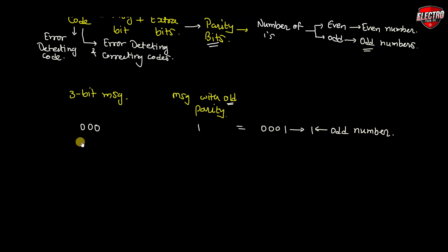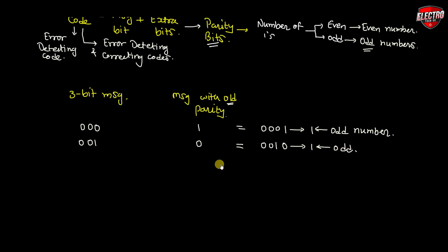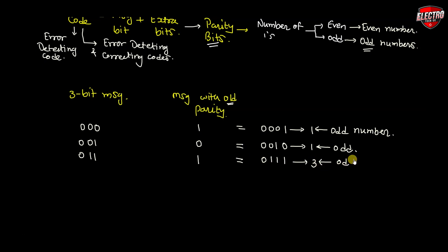Let us take one more example. For message 011, the number of ones is two. Since two is even and we want odd parity, we add a parity bit of 1. The final message becomes 0111, where the number of ones is three, and three is an odd number. This way we can create a message with odd parity.